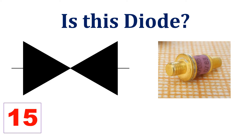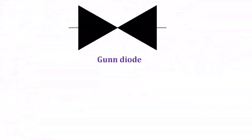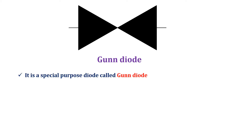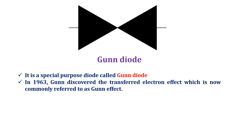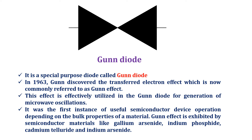Did you identify what is shown in the figure? Is this a diode? Yes, this is a special purpose diode called the Gunn diode. In the year 1963, Gunn discovered the transferred electron effect, which is now commonly referred to as the Gunn effect. This effect is effectively utilized in the Gunn diode for generation of microwave oscillations. It was the first instance of useful semiconductor device operation depending on the bulk properties of a material.